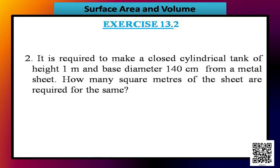Students, let us now solve exercise 13.2, question number 2. It is required to make a closed cylindrical tank of height 1 meter and base diameter 140 centimeter from a metal sheet. How many square meters of the sheet are required?